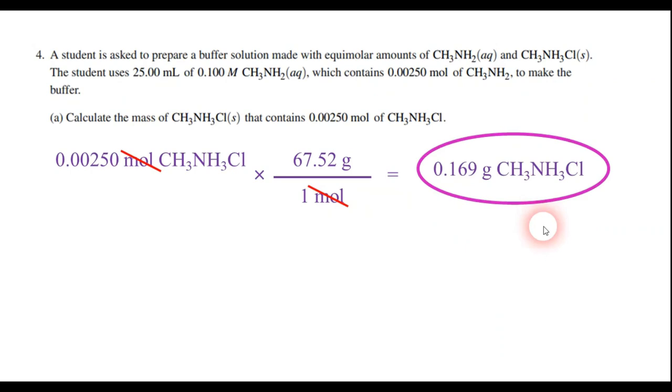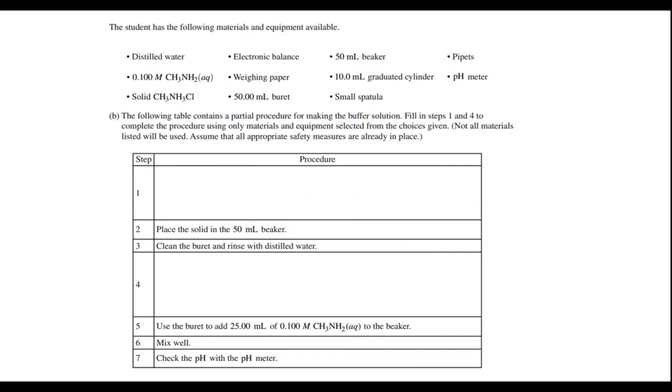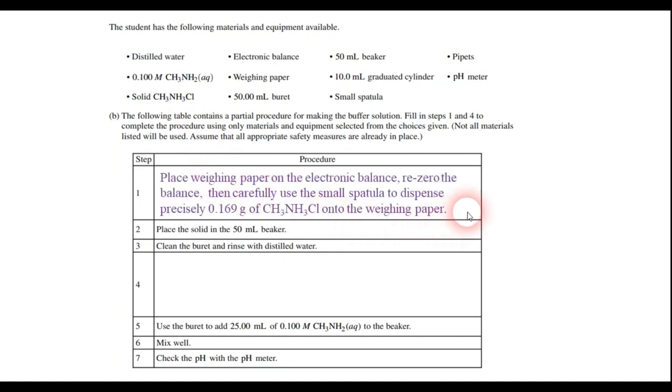Now, part B is a laboratory question, and it tells us that we're going to actually create the buffer, and we have several different types of materials available. And this question is asking, how do you actually go about making the buffer solution? And step one, what do you do before you place the solid in the 50 milliliter beaker? Well, notice that we have the solid conjugate acid compound there. So somehow we have to weigh out the correct amount. And so step one, I believe, involves us having to actually do the process of weighing that out.